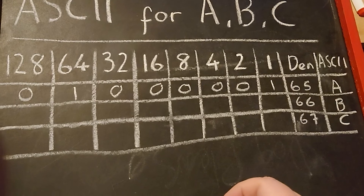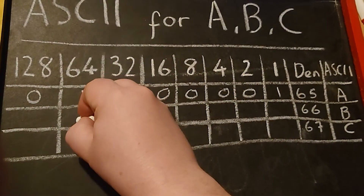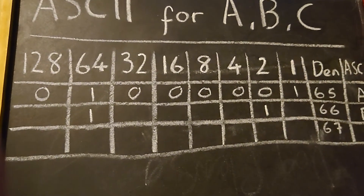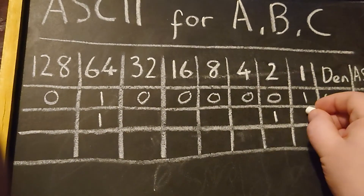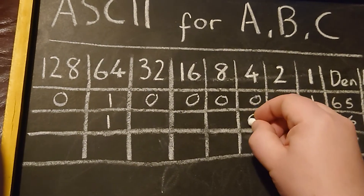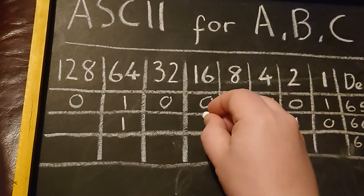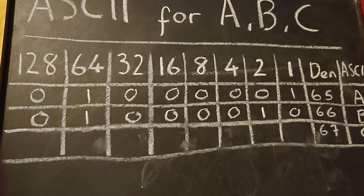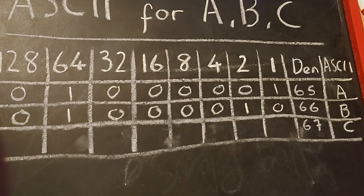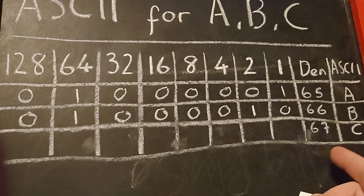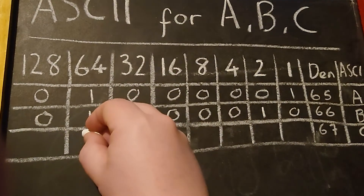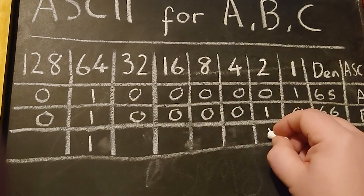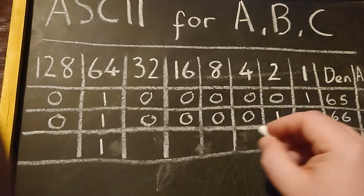The denary for B is 66, so we place 64 and then 2 to make 66, and fill the rest of the 0s in. The denary for ASCII capital C is 67, so we have 64 plus 2 plus 1 to make 67, and fill the rest of the 0s in.